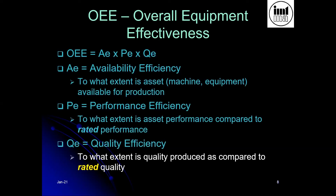Finally, we have QE — quality efficiency — which is to what extent is the quality produced compared to the rated quality. To summarize: OEE is the multiplication of three factors — availability, performance, and quality — and these three factors together result in the overall equipment effectiveness, or effectively using your equipment.